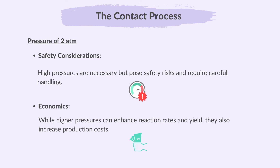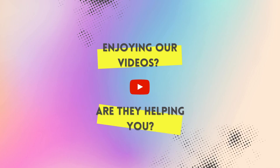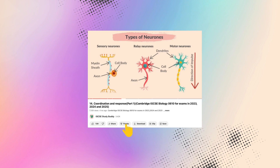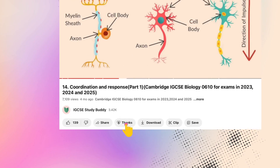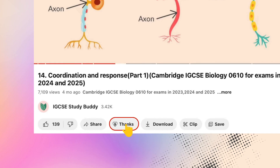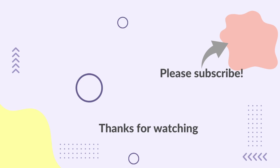That concludes Part 4 of Topic 6: Chemical Reactions. Hope this video helped you — please share your thoughts and suggestions in the comment section. Thank you for watching and please don't forget to subscribe to IGCSE Study Buddy for more revision videos. Bye!